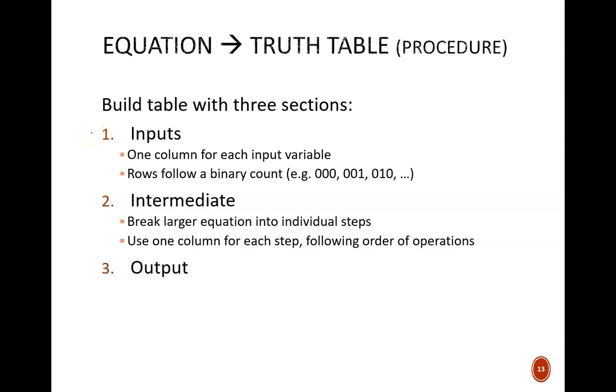The input section needs one column for each input variable. The binary values filled into the underlying rows should follow a straight binary count. For example, with a three input equation, the rows will go 000, 001, 010, and so on all the way down to 111.